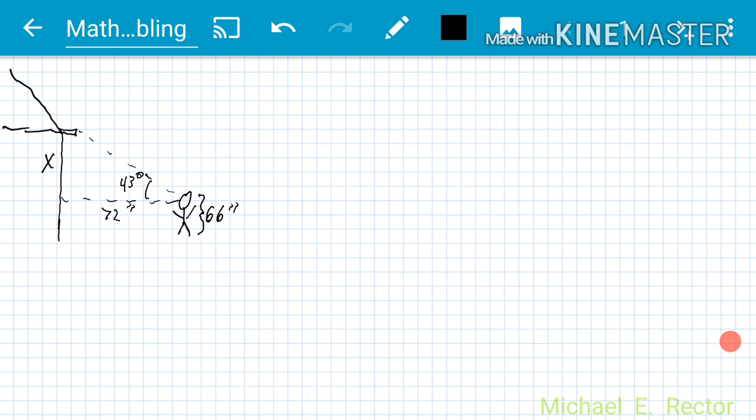So again we do tan of 43 degrees equals opposite over adjacent. X over 72.